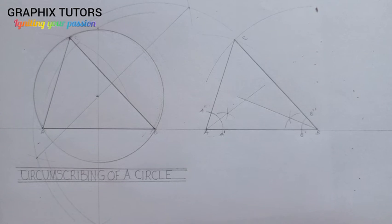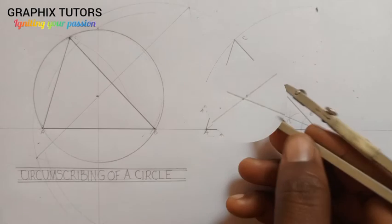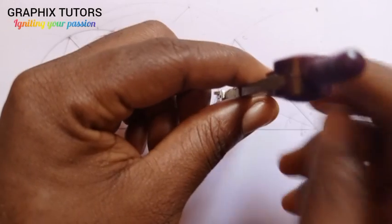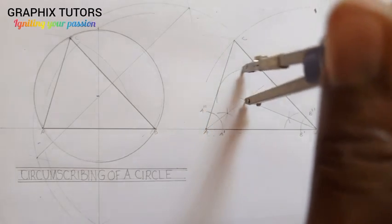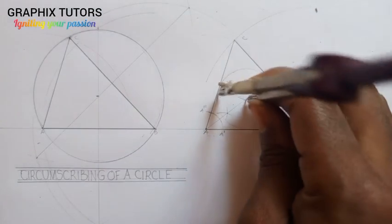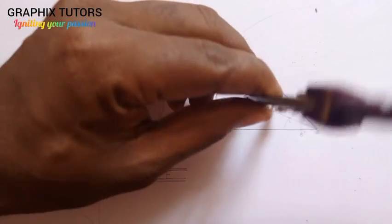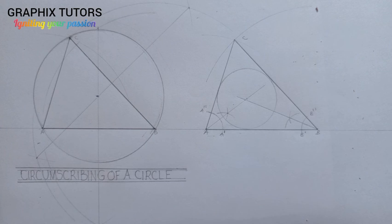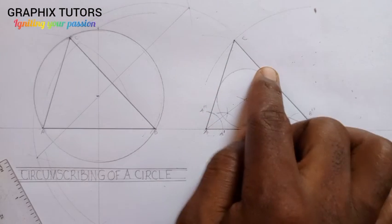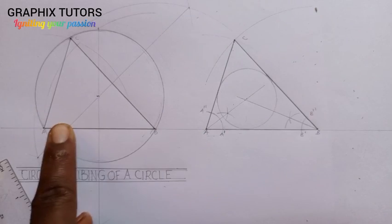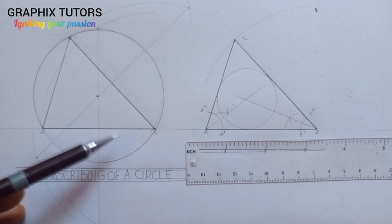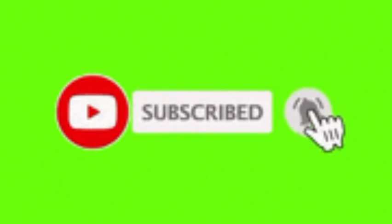Place the compass at the center — where the two angle bisectors meet — and draw the inscribing circle. The circle must touch all three sides of the triangle. This is what we call inscribing a circle and circumscribing a circle. If you found this video helpful, please click subscribe and like the video. Thanks for watching.